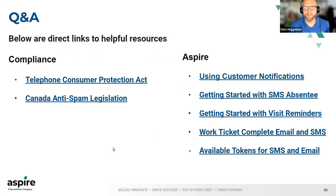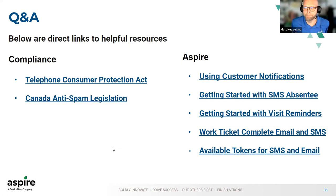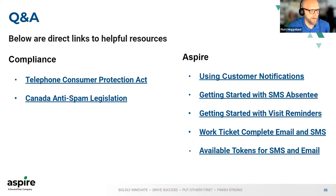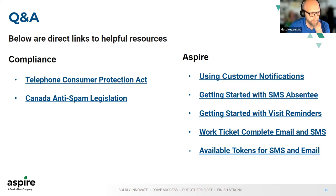We'll end here with some Q&A. There are also some compliance links here if you want to read up on those — fair warning, they will probably put you to sleep. And on the Aspire side, some helpful links there on taking advantage and getting into more specifics around knowledge base and user guide articles. One question about changing the toll-free number to a local number — not as of today. There are different regulations and policies that apply to local numbers versus toll-free numbers. Toll-free numbers actually have the least stringent rules around SMS for both promotional and transactional, so that's why we chose a toll-free number.